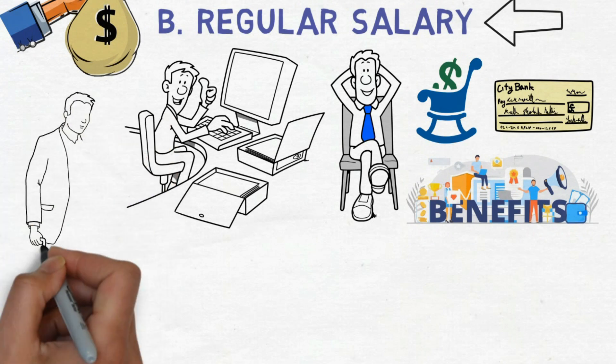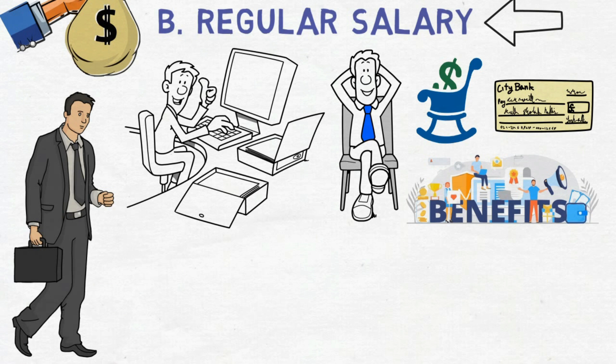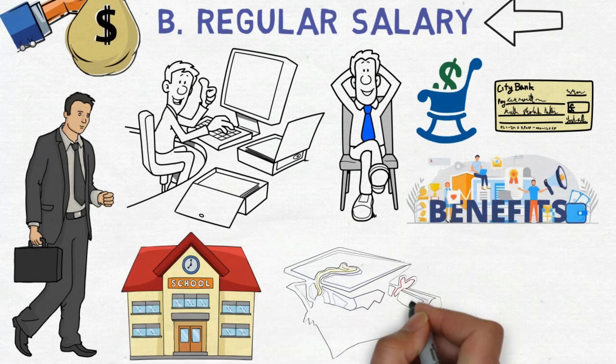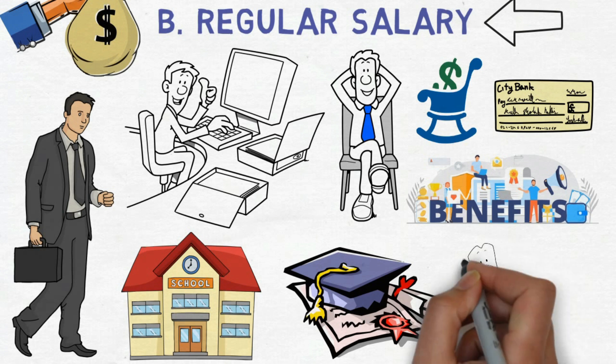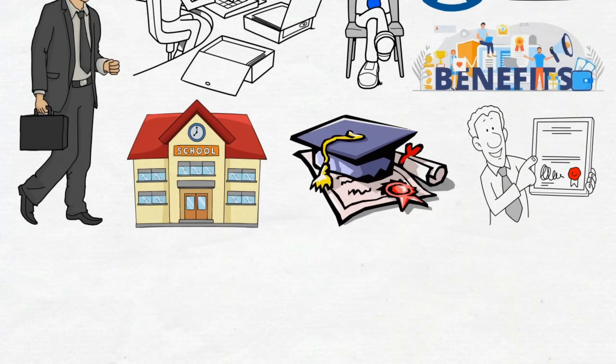Lastly, the trajectory of our upbringing often steers us toward seeking employment. As we mature, we attend school, select a college major, and subsequently cross our fingers for a job within our chosen field, dedicating four decades or more to this pattern until retirement.